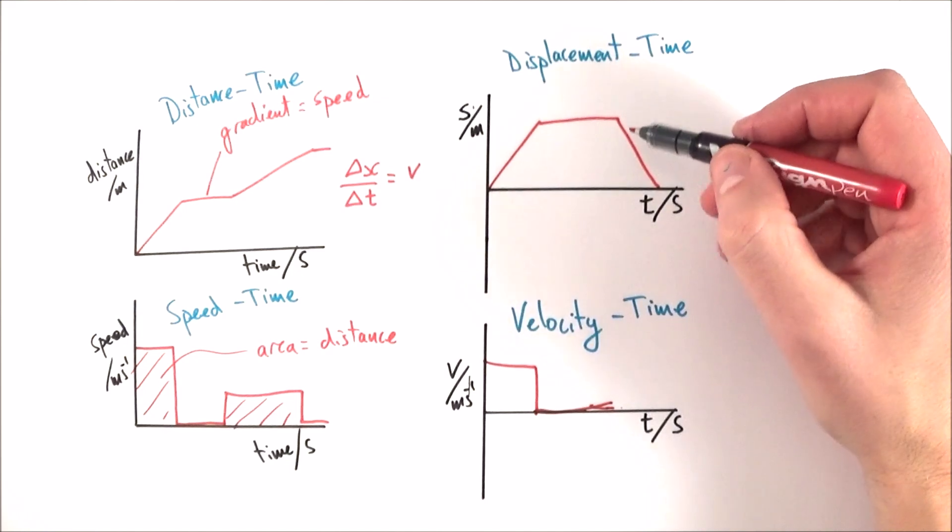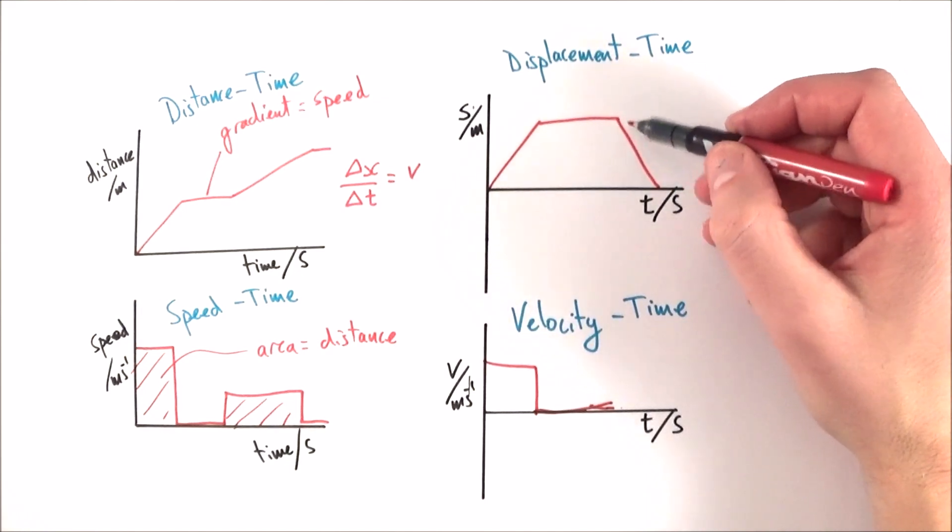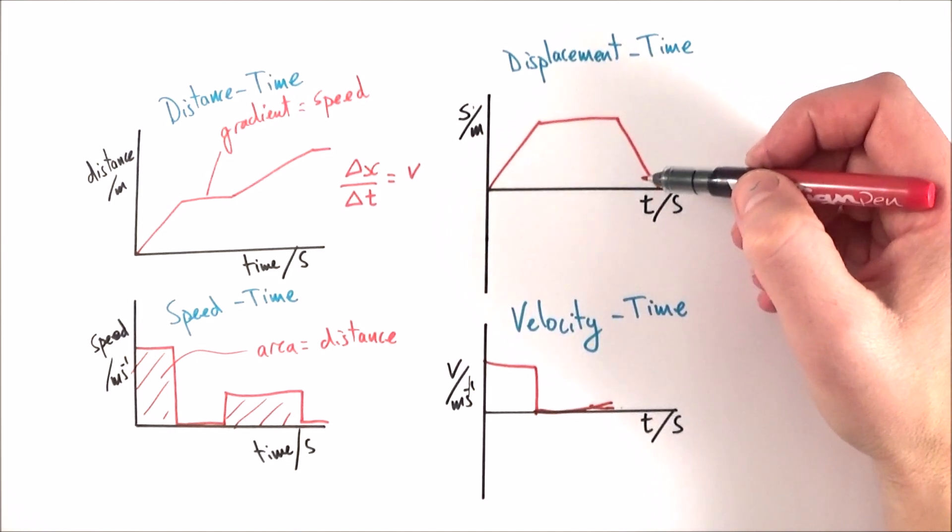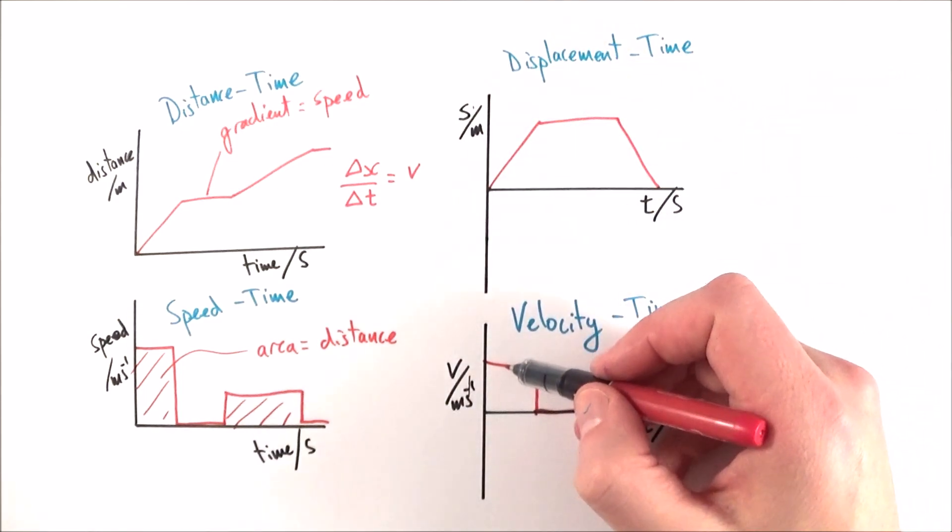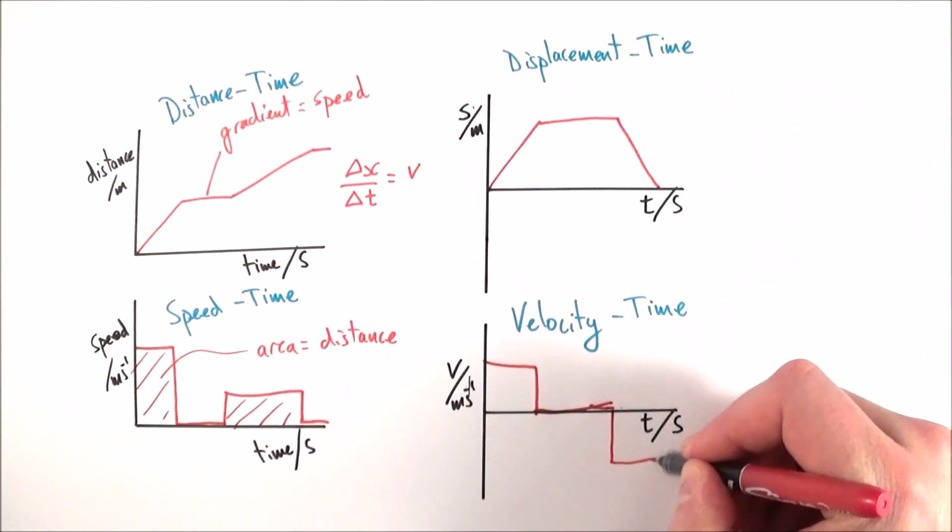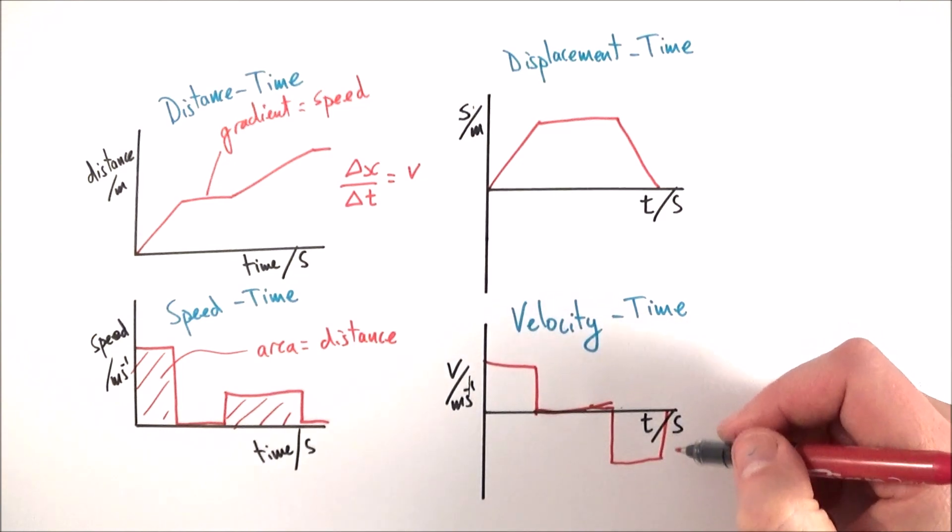The final part though, they're coming back. So that means they have a negative gradient, which means they must have a negative velocity. Whereas before that was a positive value, here it is zero.